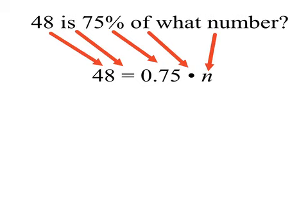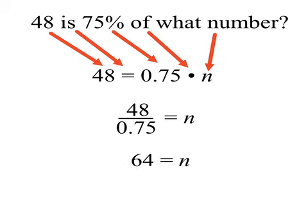And using something called the inverse operation, we know that if 48 is 0.75 times a number, then 48 divided by 0.75 is the number. And again, you can do it with pencil and paper, or you can get out a calculator and type 48 divided by 0.75, and your answer will be 64. So we now know that 48 is 75% of 64.